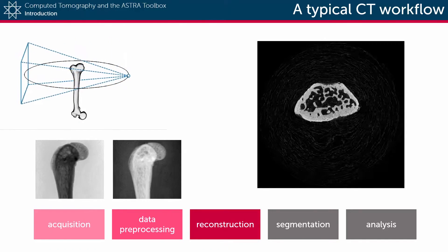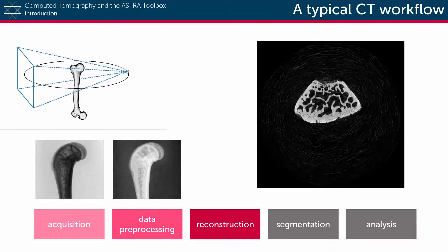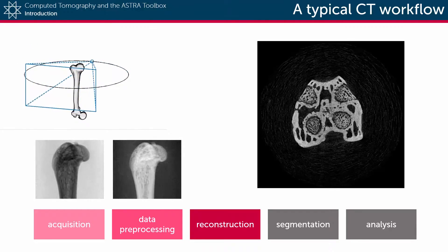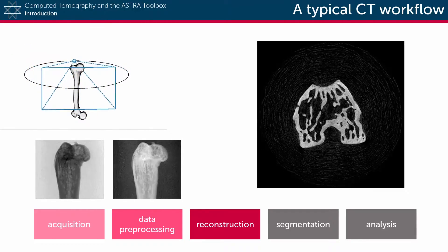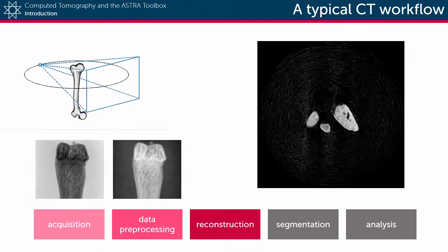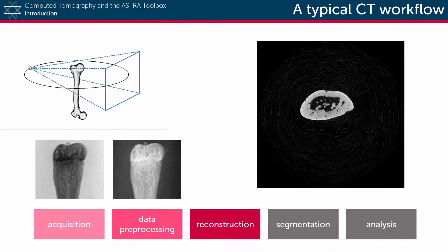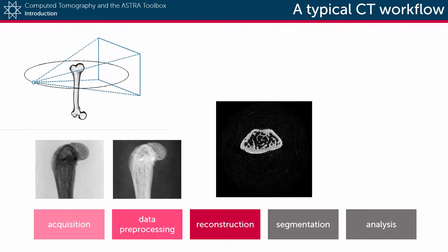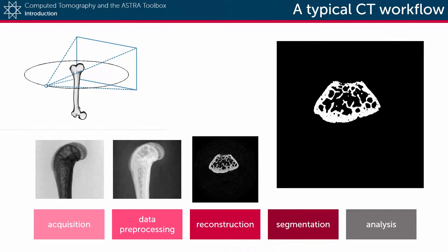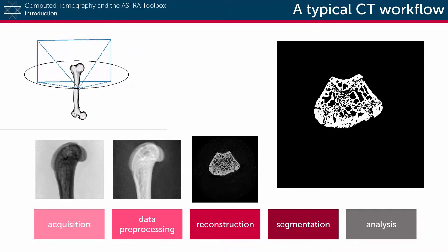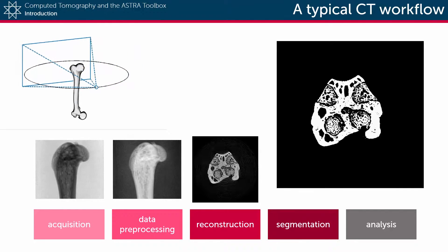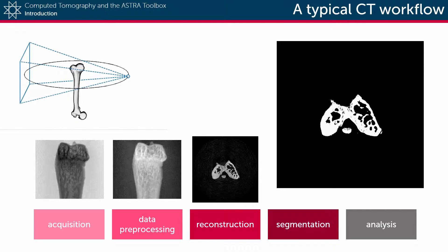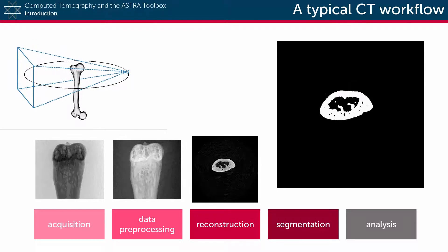Before these images can then be analyzed, however, it is often crucial to accurately figure out which pixels belong to exactly which material. This is called segmentation, and the results are reconstructed images that only contain a few different values, one for each material in the scanned object.